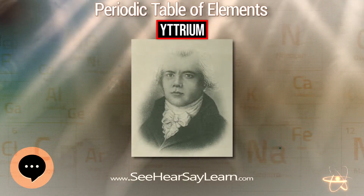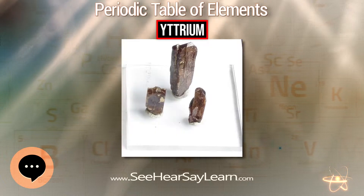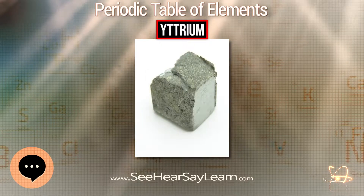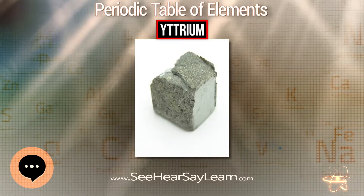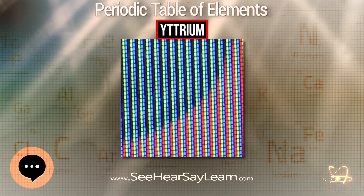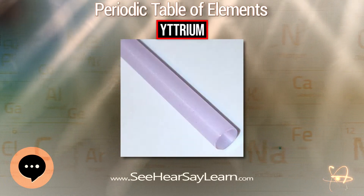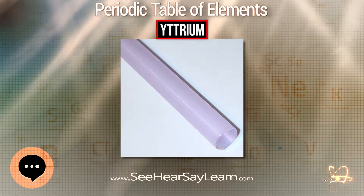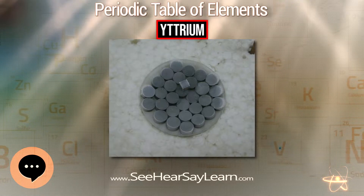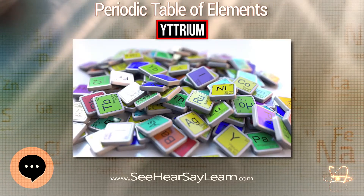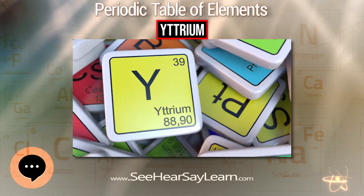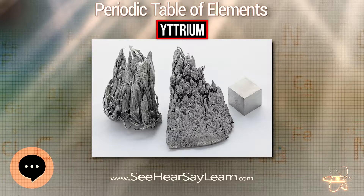The Y³⁺ ion is colorless in solution because of the absence of electrons in the d and f electron shells. Water readily reacts with yttrium and its compounds to form Y₂O₃. Concentrated nitric and hydrofluoric acids do not rapidly attack yttrium, but other strong acids do. With halogens, yttrium forms trihalides such as yttrium fluoride, yttrium chloride, and yttrium bromide at temperatures above roughly 200°C.